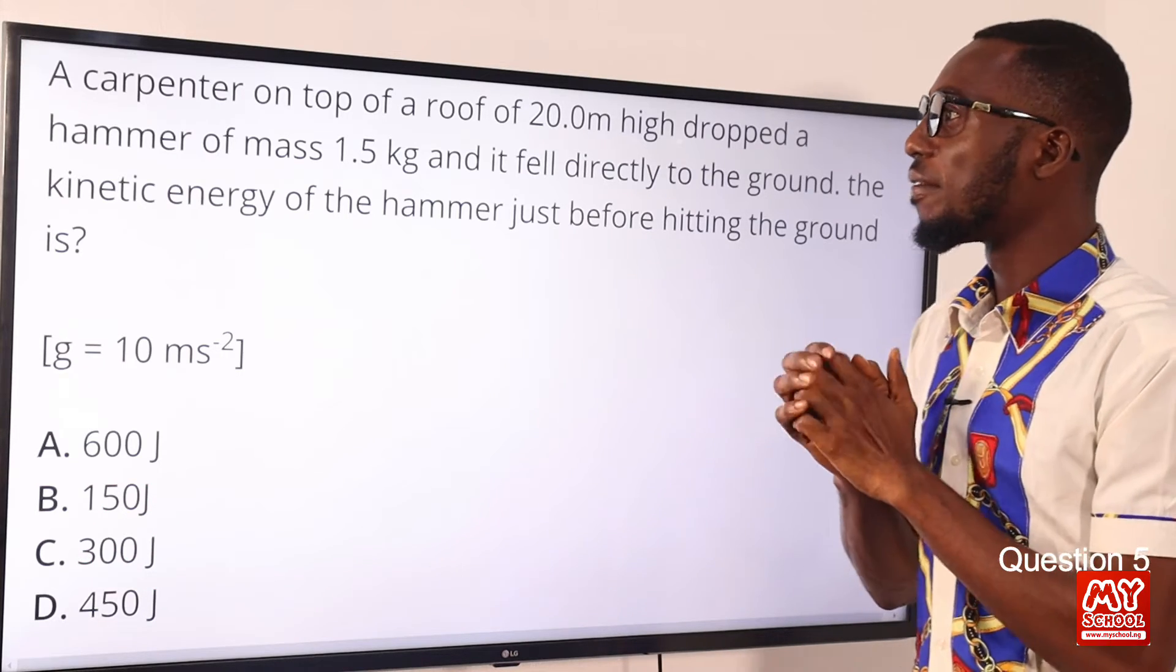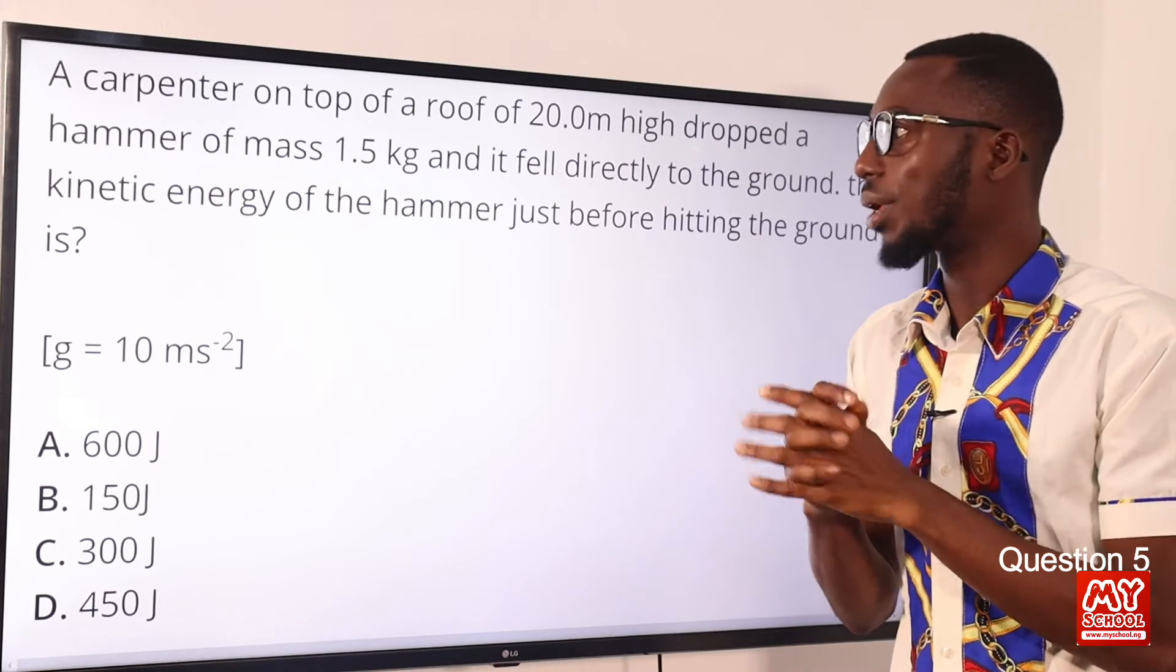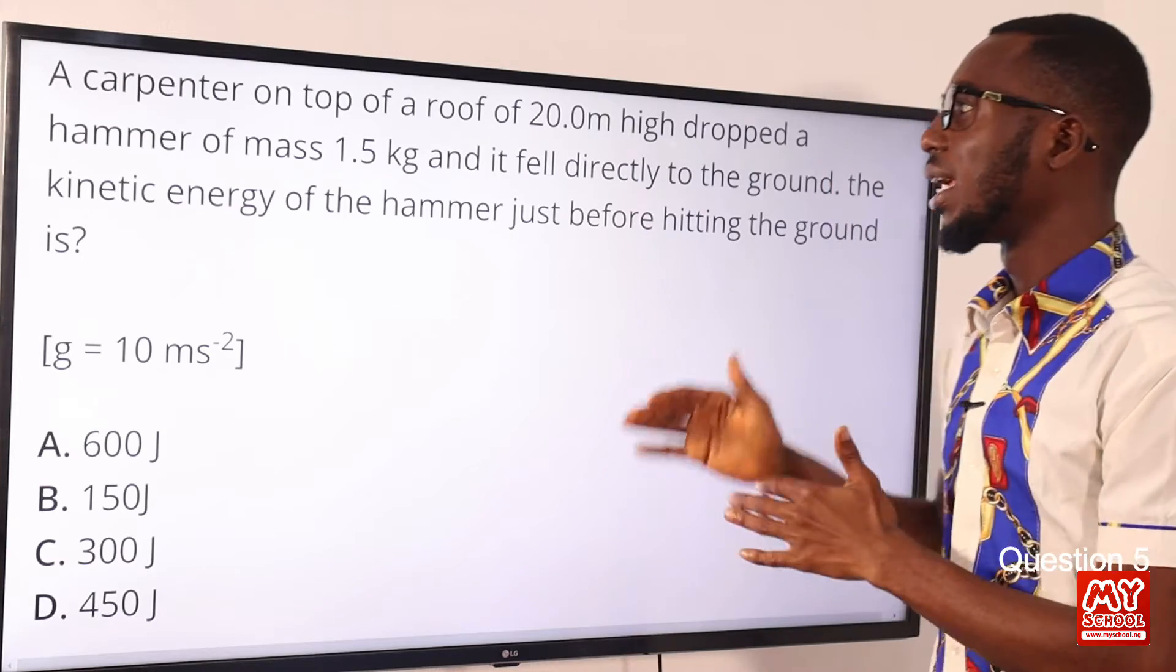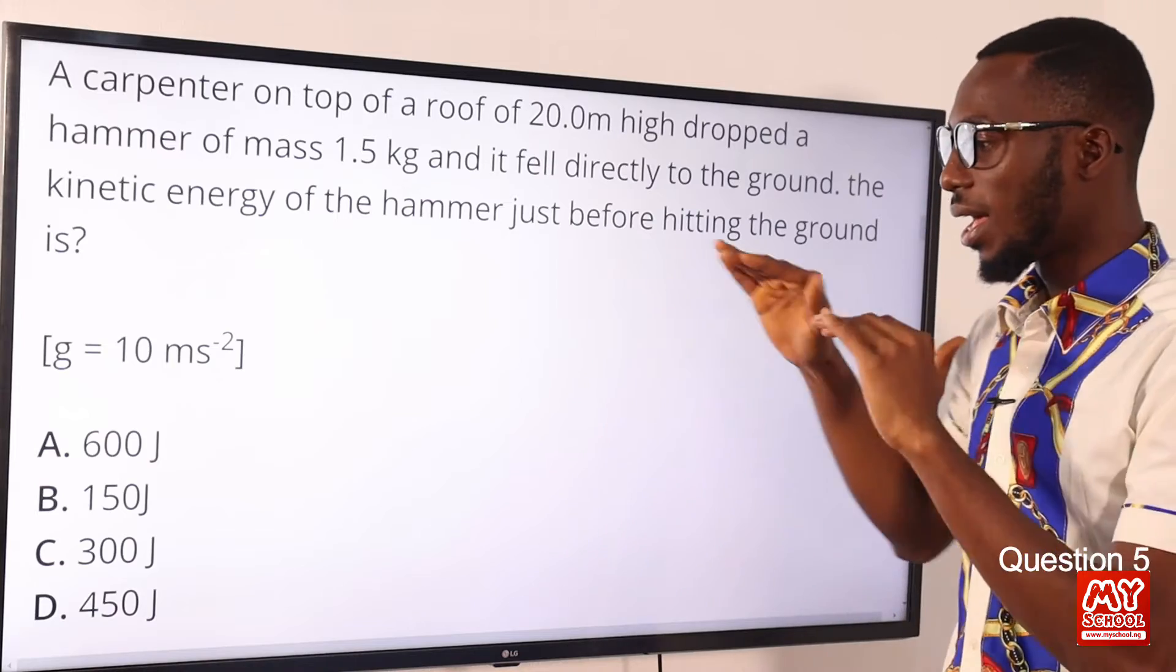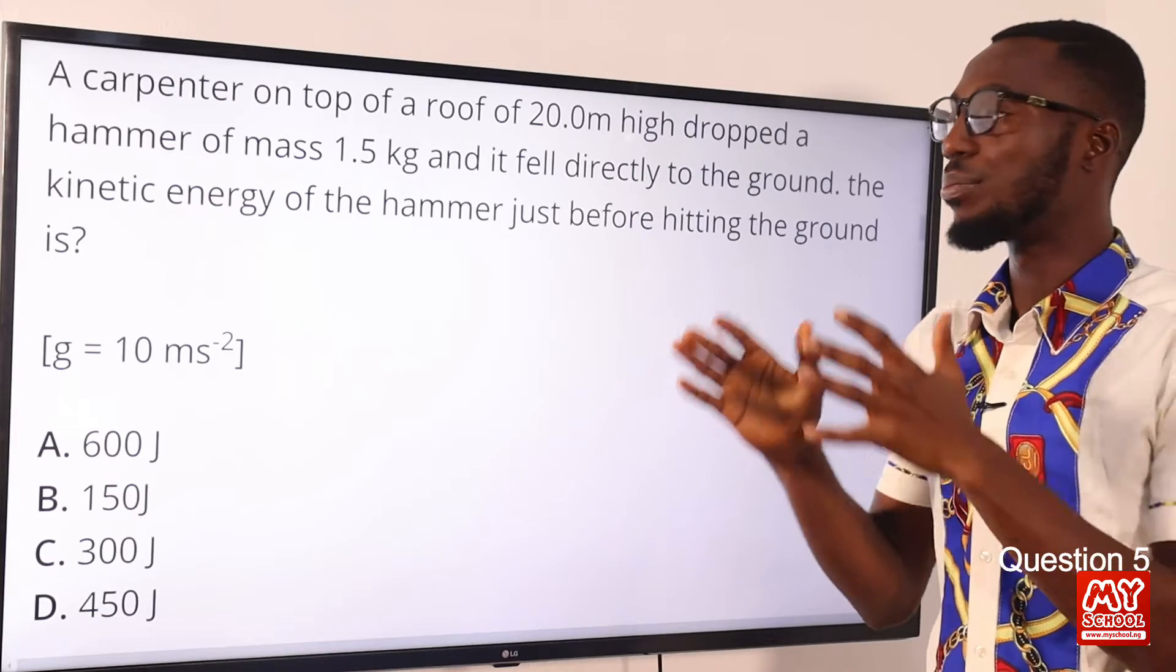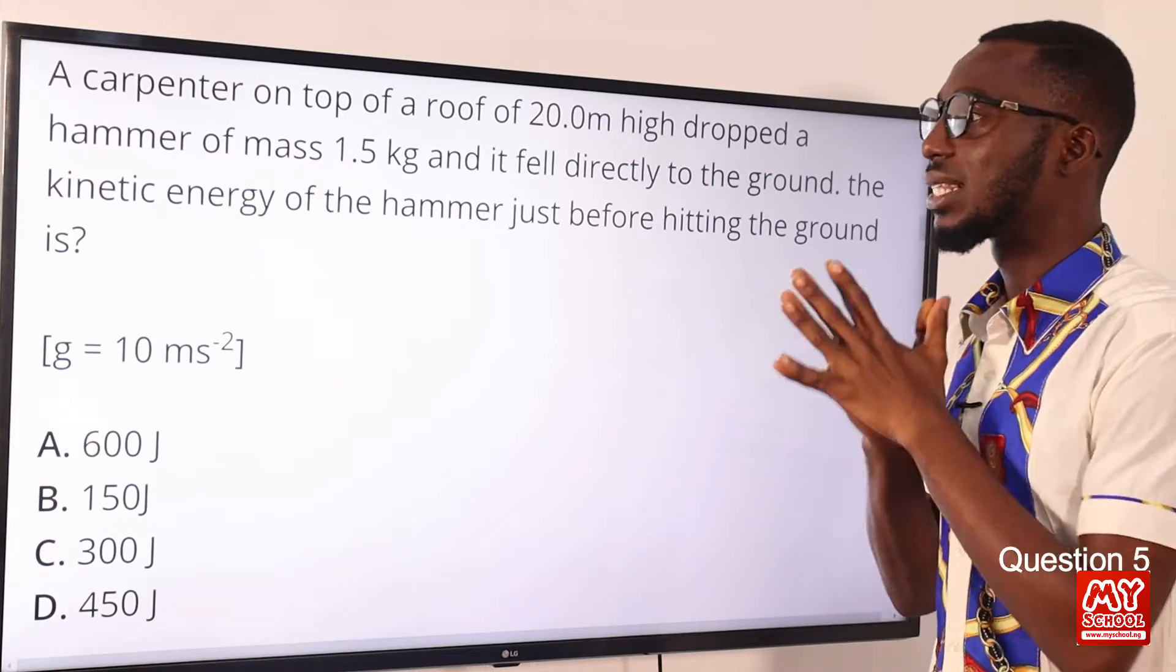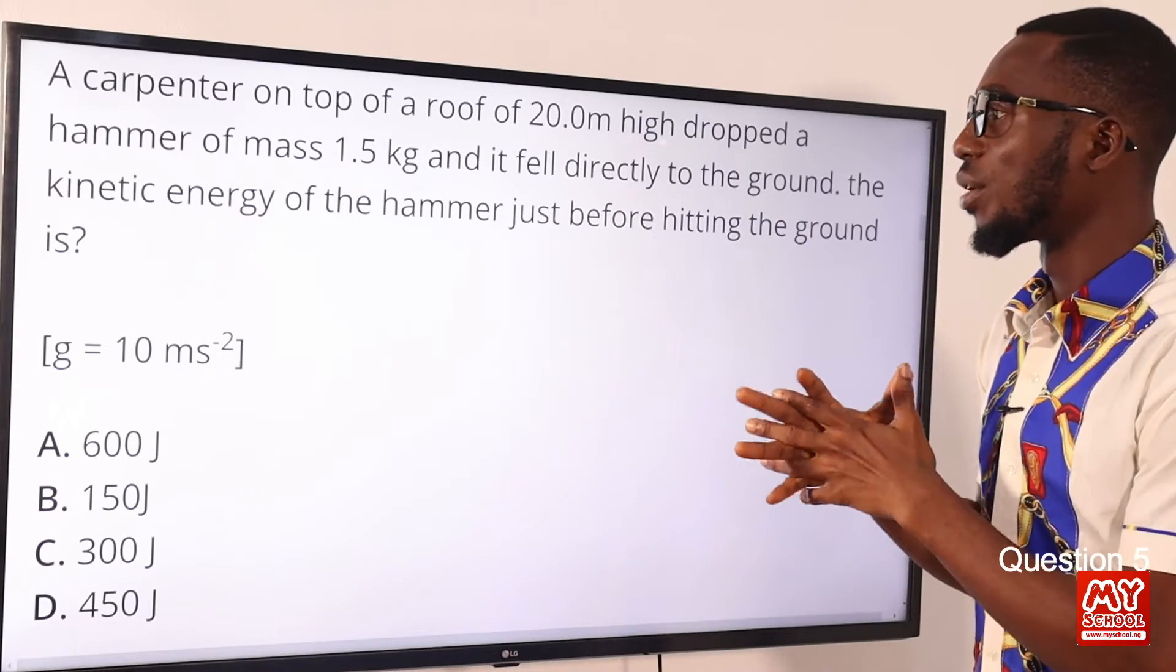A carpenter on top of a roof of 20.0 meter high dropped a hammer of mass 1.5 kg and it fell directly to the ground. So the kinetic energy of the hammer just before hitting the ground is what? So take note of this. At a certain height above the ground, it is all potential energy. Just on the ground, at the ground level, it's all kinetic energy. But you should always note this, total energy of the body at each point is equal to the constant MGH, mass times gravity times height. So that is what we are going to use.